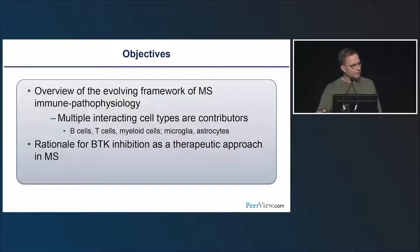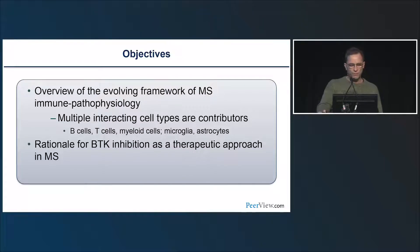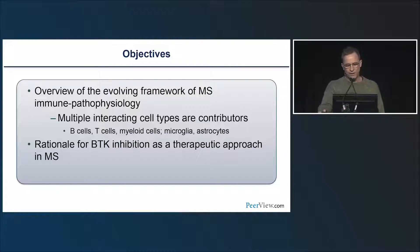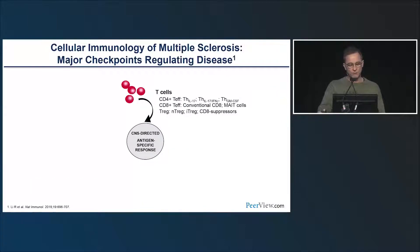We'll start with the initial presentation on why one would develop BTK inhibition as an MS therapeutic approach. My objectives are to set Dr. Reich up for his presentation of the clinical trial data, with two main goals: a brief overview of the evolving framework of MS immune pathophysiology, highlighting the relevance of multiple different cell types interacting with one another both in the periphery and in the CNS, and describing the rationale for BTK targeting as a therapeutic approach in multiple sclerosis.